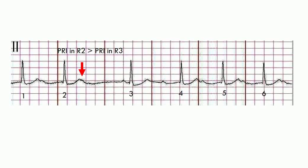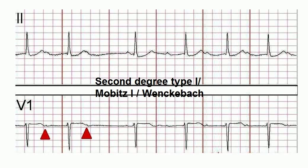Now this strip is from the same patient. Using a caliper, we can march the P-waves. As you can see, there is a non-conducted P-wave after QRS number 2. The PRI on the last conducted wave is longer compared to the first conducted P-wave. Thus, this is second-degree AV block type 1, or Mobitz 1, also known as Wenckebach.